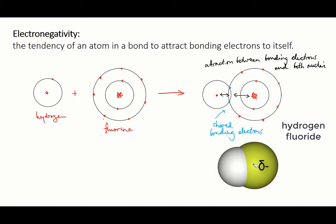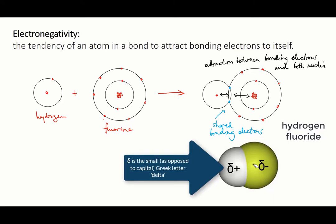And the hydrogen, which is a bit electron deficient, has a partial positive charge. We represent this using a small delta negative, meaning less than a full negative charge, and small delta positive.